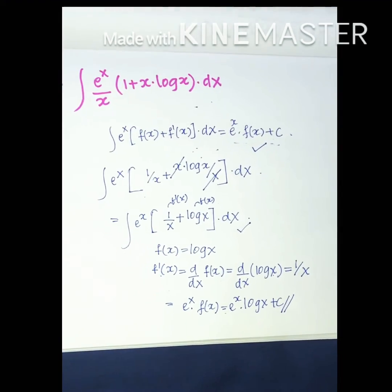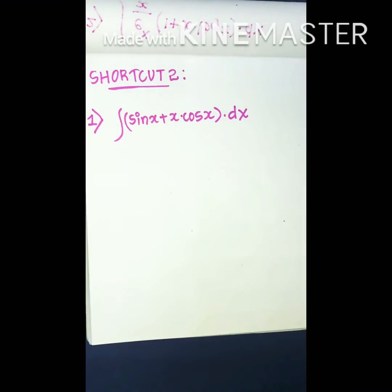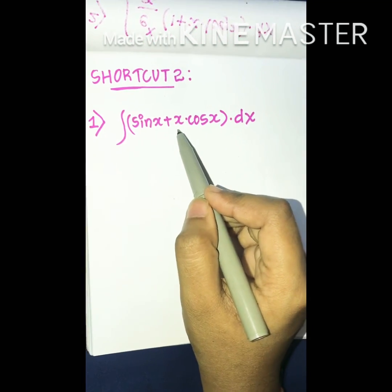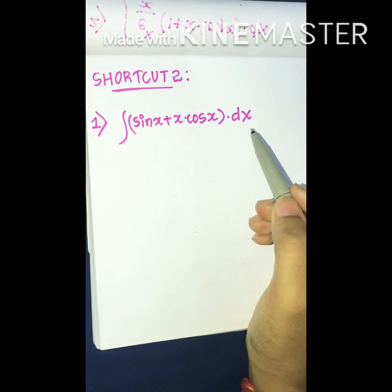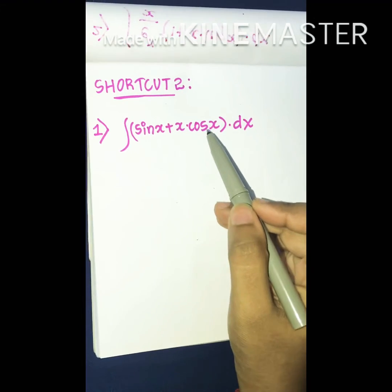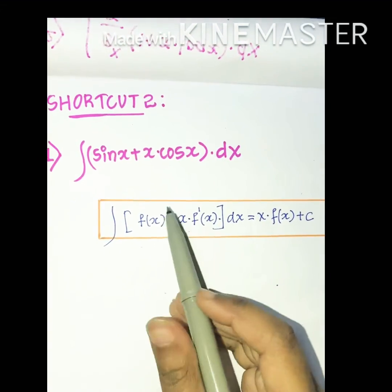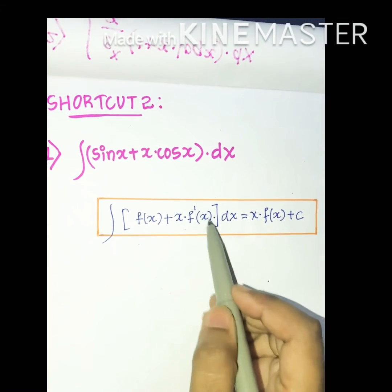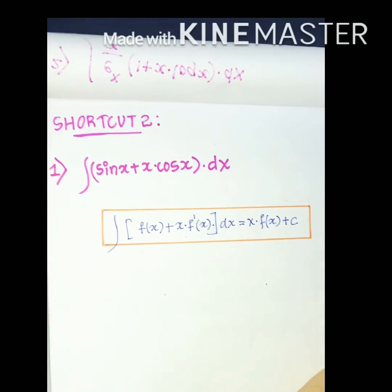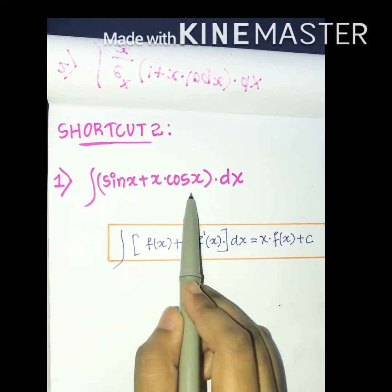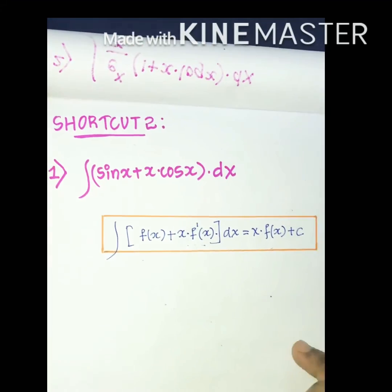Now let's move on to the second shortcut. The first question for this shortcut is integration of (sin x + x cos x) dx. The shortcut states: integration of [f(x) + x·f'(x)] dx = x·f(x) + C. This is quite similar to the previous shortcut. Check whether the question is in this form before applying it.